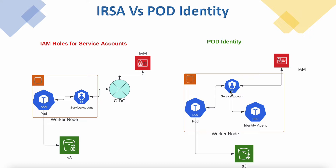The service account internally is actually using an identity agent, and that identity agent is actually a daemon set we have to configure. We will go to those details when we go to the demo section. This identity agent will help the pod service account to assume an IAM role. So when you are accessing an S3 bucket or any other AWS services, this service account internally assumes the IAM role which is assigned to the pod, giving access to resources within AWS.